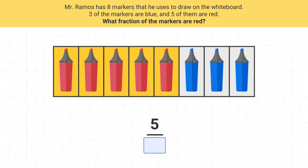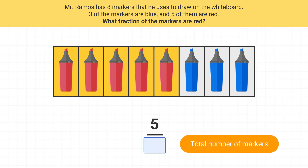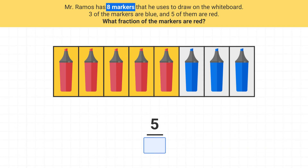The five is my numerator. Next, which of these is the best description of the denominator? The denominator will be the total number of markers that Mr. Ramos has. The problem tells us that Mr. Ramos has eight markers, so our denominator will be eight. Five eighths of Mr. Ramos's markers are red.